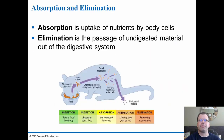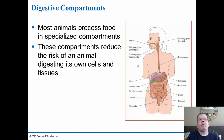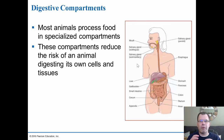Absorption is the uptake of nutrients once food has been broken down into small molecules. Elimination is getting rid of any undigested material out of the digestive system. In most animals, food is processed in specialized compartments that reduce the risk of the animal digesting its own cells and tissues. The digestive system is essentially a tube inside a tube — a closed system that keeps digestion separate from the rest of the body.